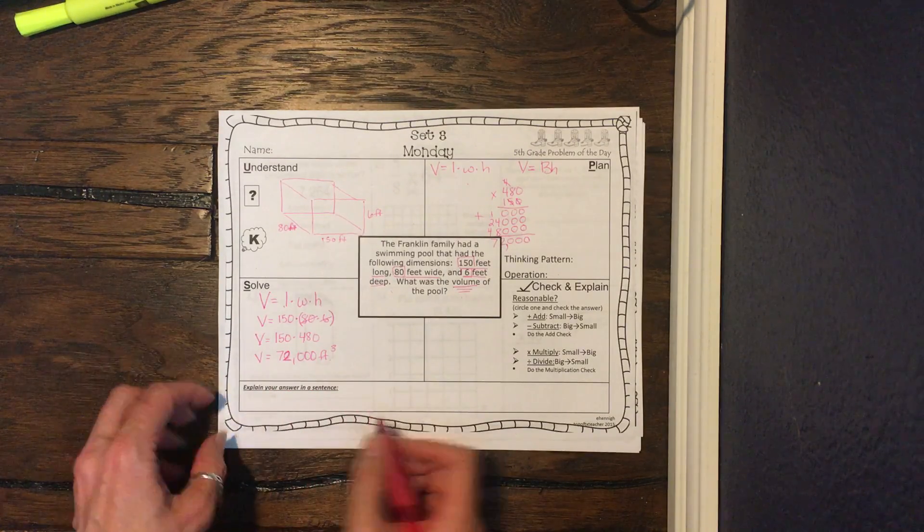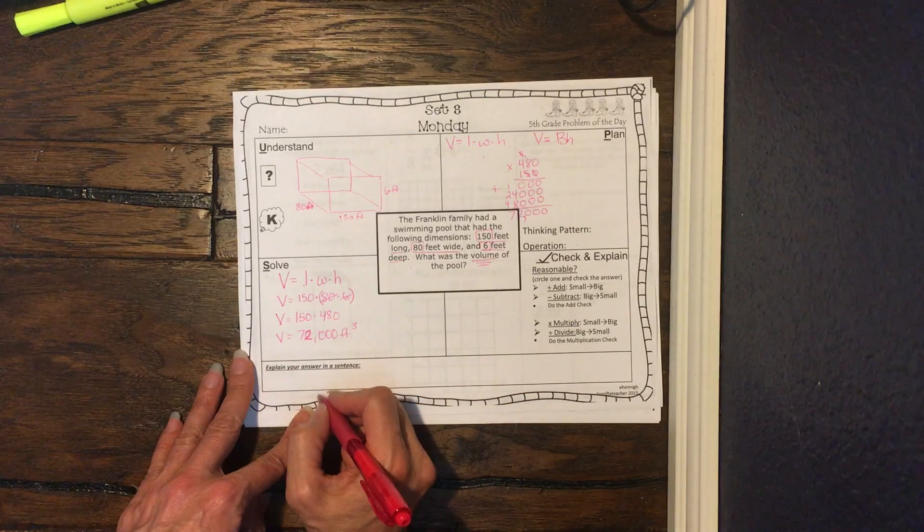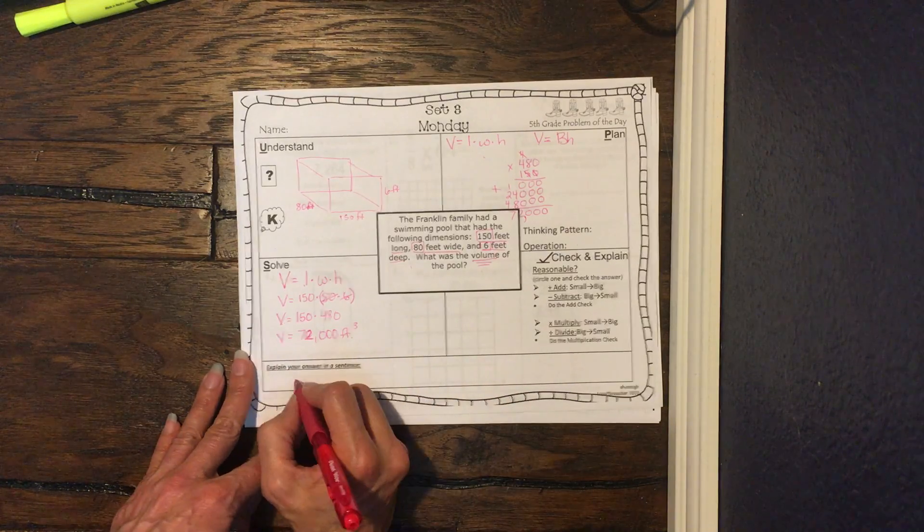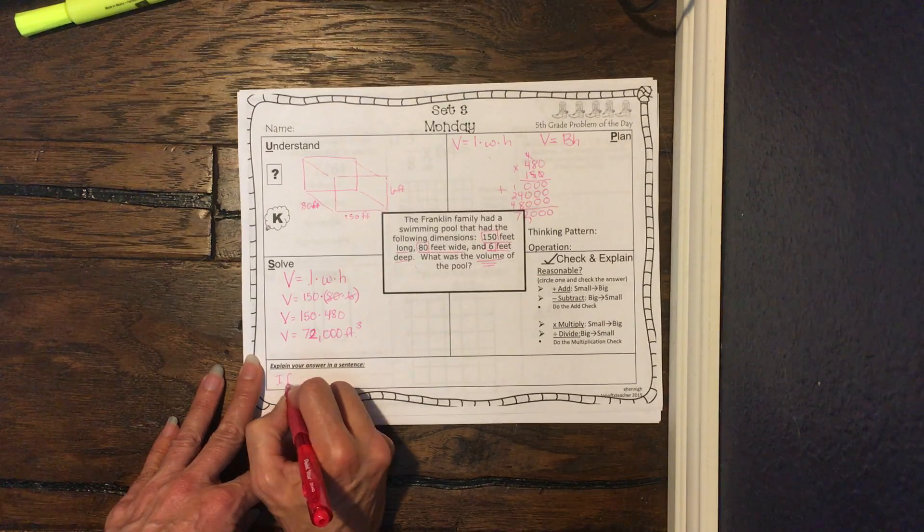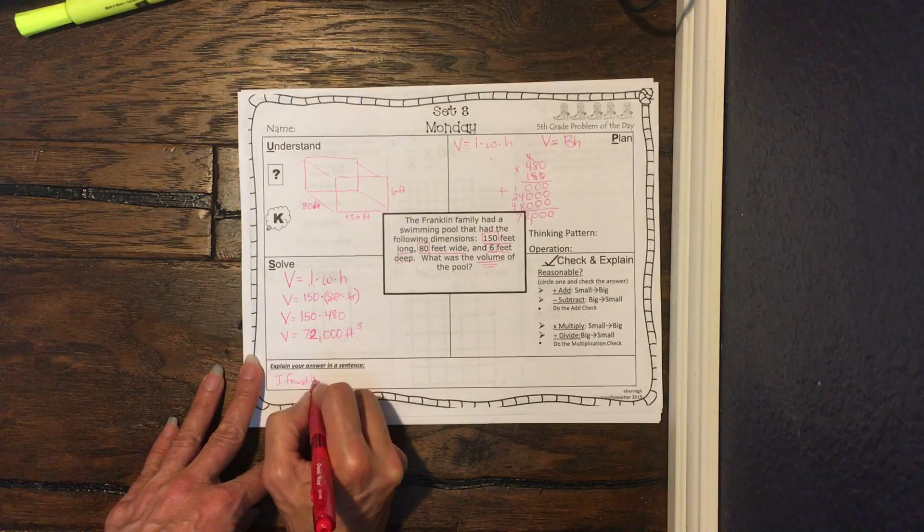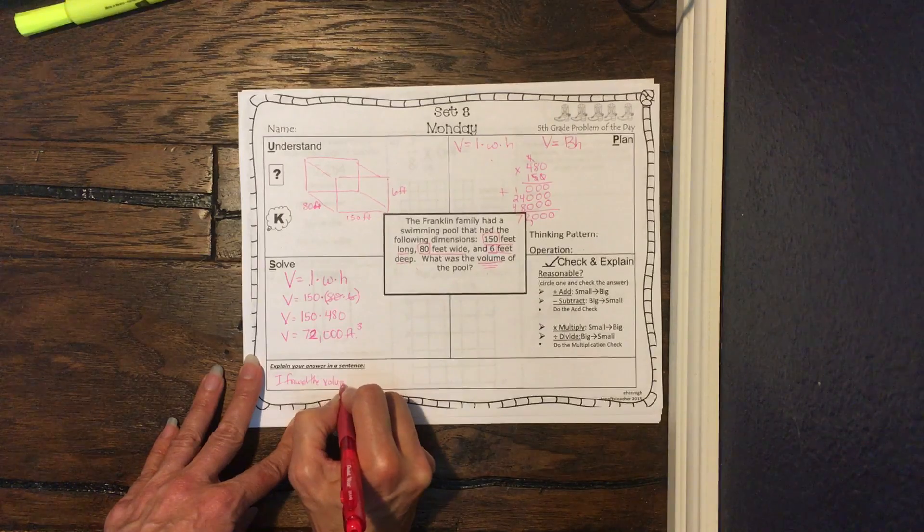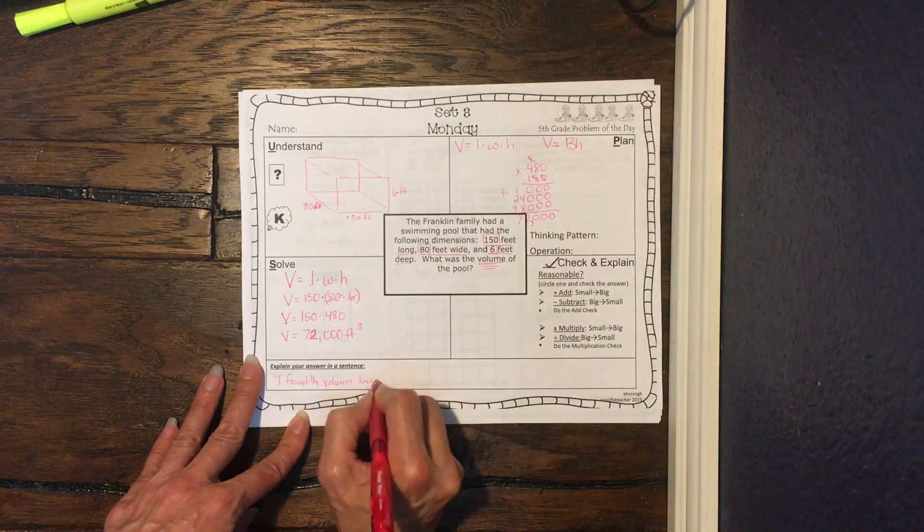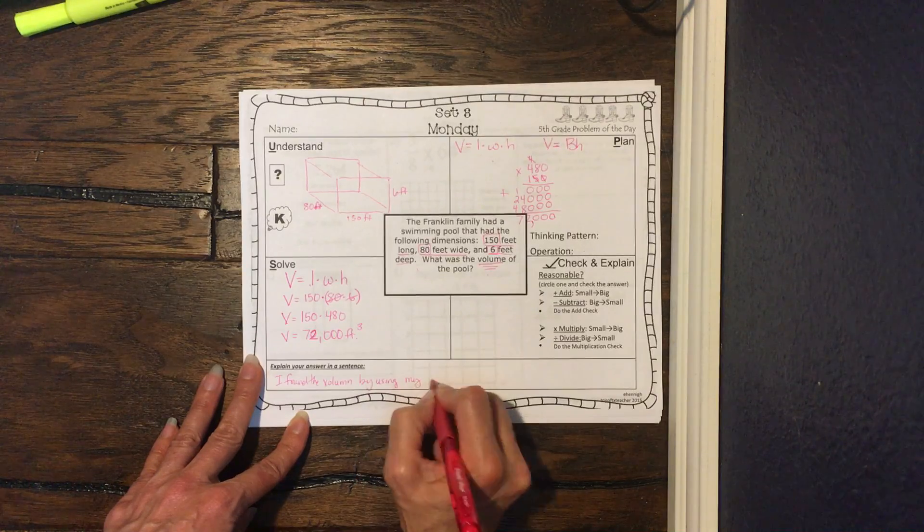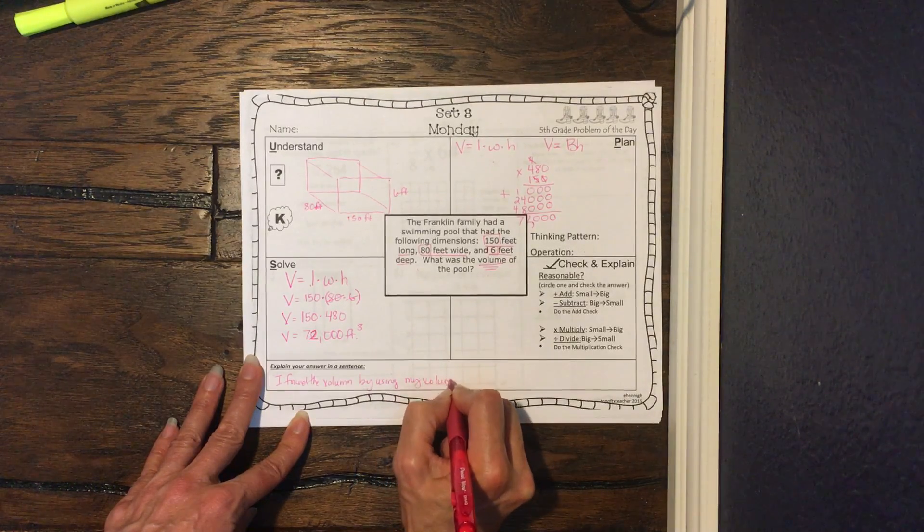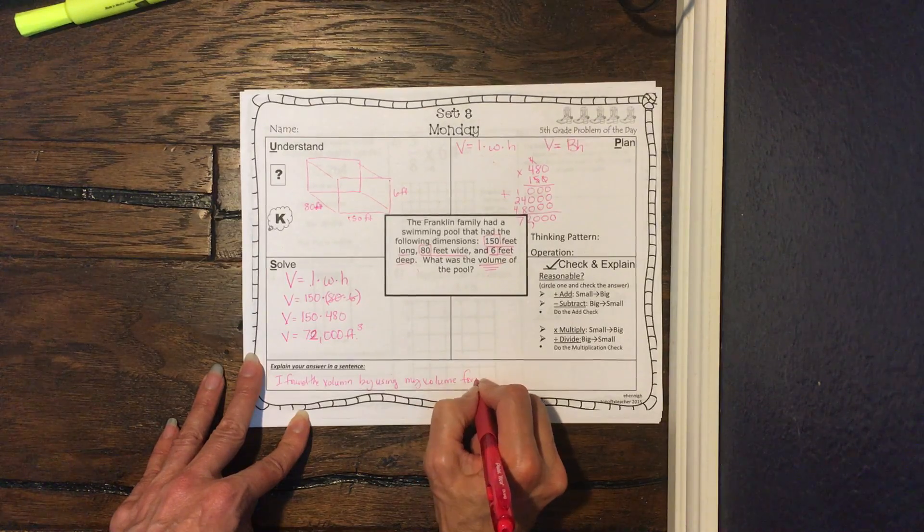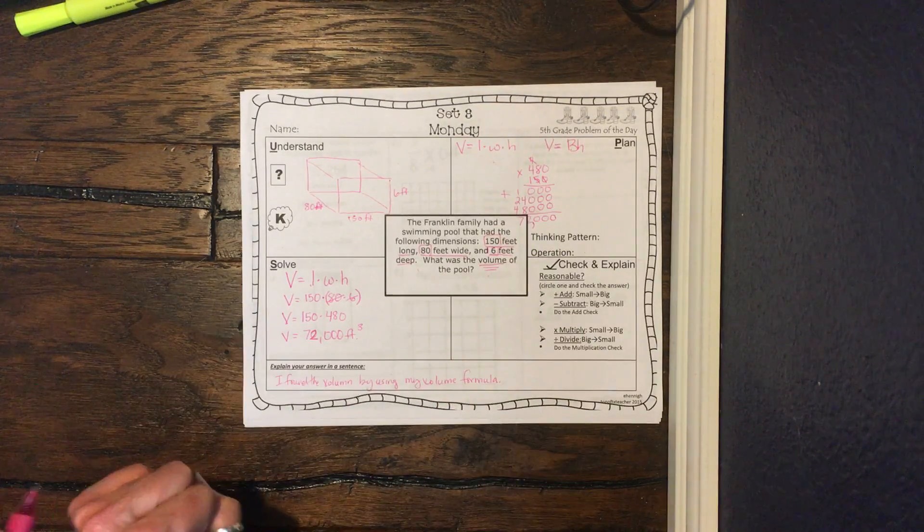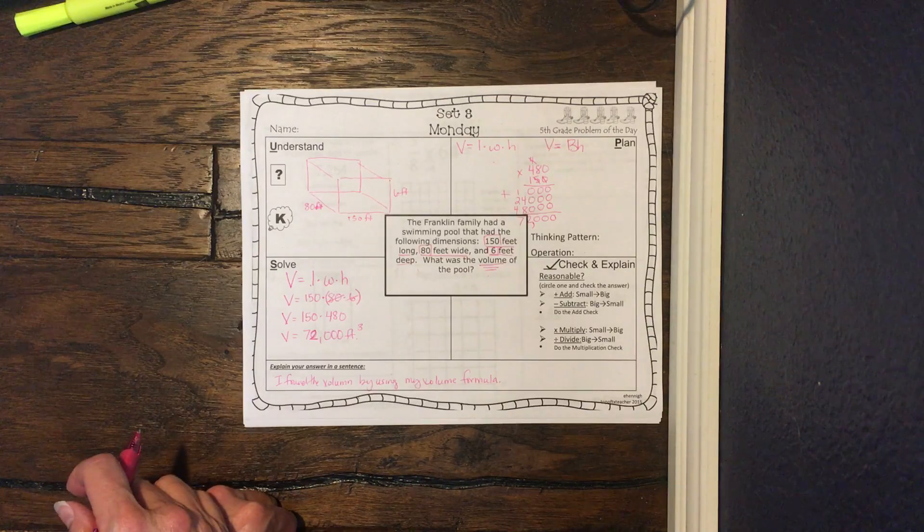So explaining your answer in a sentence, I don't really care how y'all do that. I would just say, I found the volume by using my volume formula. All right. So that's pretty much what you're going to do every week.